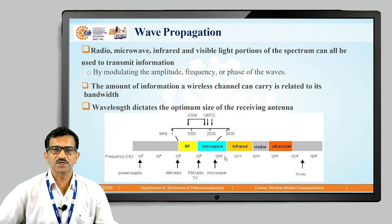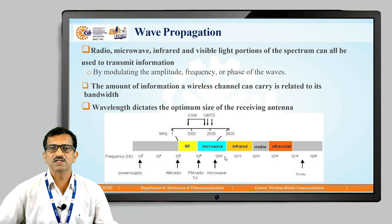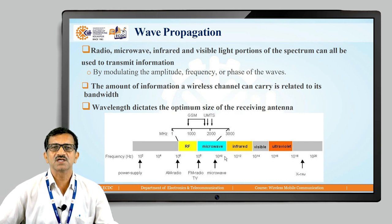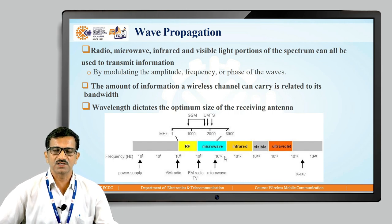Different bands of frequencies — like radio, microwave, infrared, and visible light — are shown in the spectrum. RF, microwave, infrared, visible light, and ultraviolet light wavelengths and frequencies are all shown. In the case of GSM and UMTS, 800–900 MHz and 1800–1900 MHz are used for GSM. UMTS uses 1800–1900 MHz, 2.1 GHz, and 2.4 GHz for different applications.